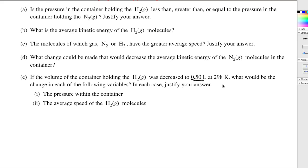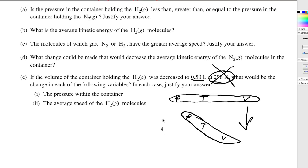If the volume of the container holding the H2 particles was decreased to 0.5 liters at 298K, what would be the change in each of the following variables? In each case, justify your answer. Let's think about the PTV stick that I talked about in class today. Are we changing the temperature? No, we are not changing the temperature. Temperature, in this case, is going to remain constant at 298. If the volume was decreased, notice pressure would go up.